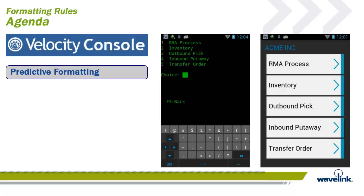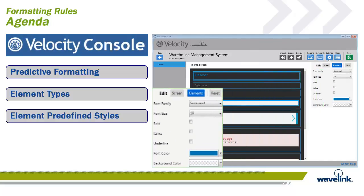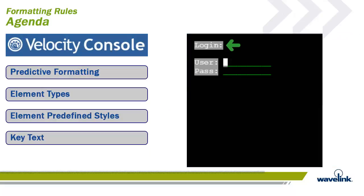The Formatting Rules module will talk about Velocity's modern predictive formatting algorithm. The algorithm uses element types and allows for the element types to be predefined globally or locally. We will also discuss key text and how it tells the Velocity client how to re-display the screen.